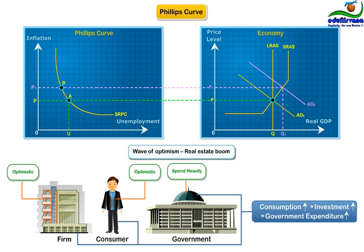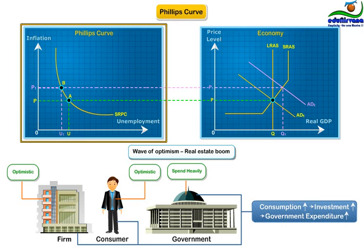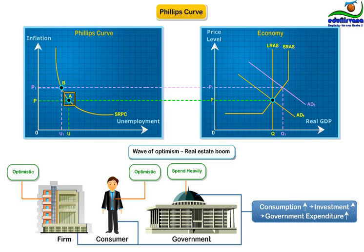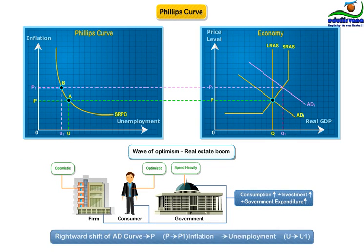The Phillips curve maps inflation levels with unemployment rates. When AD1 shifts to the right and meets the short-run aggregate supply curve at a higher point, the larger capacity utilization by firms and hence larger outputs generate greater employment and thus a lower rate of unemployment, U1. At point A, the level of unemployment is U, and it decreases to U1 at point B. We notice that a rightward shift in the AD curve leads to higher prices — P to P1 — and hence higher inflation, and lower unemployment — U to U1.